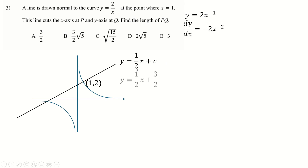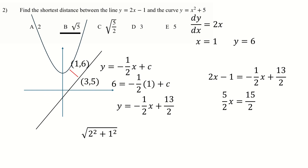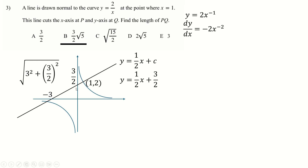Putting (1, 2) into the normal line gives a y-intercept of 3/2, which is the coordinate of Q. Setting y = 0 gives x = −3, so P is at (−3, 0). For the distance PQ, we could do 3² + (3/2)², but notice this is the same triangle as the (1, 2) case scaled up by 3/2 — the hypotenuse of that was √5, so PQ = (3/2)√5. Spotting similar Pythagorean triples lets you reach the answer quickly.